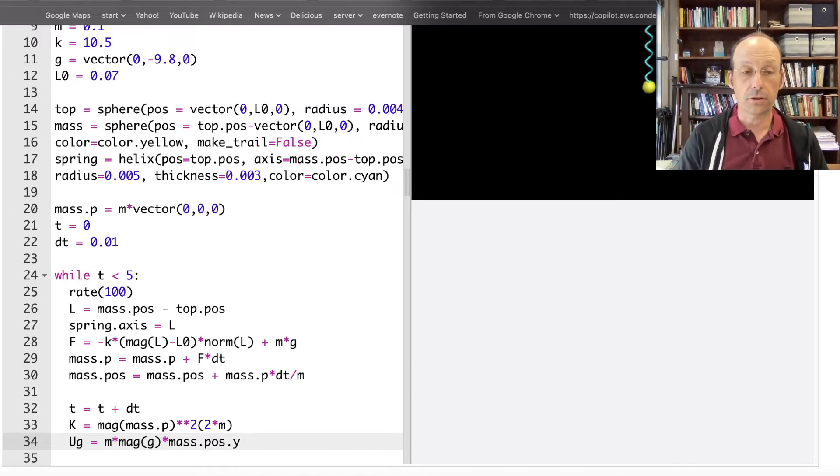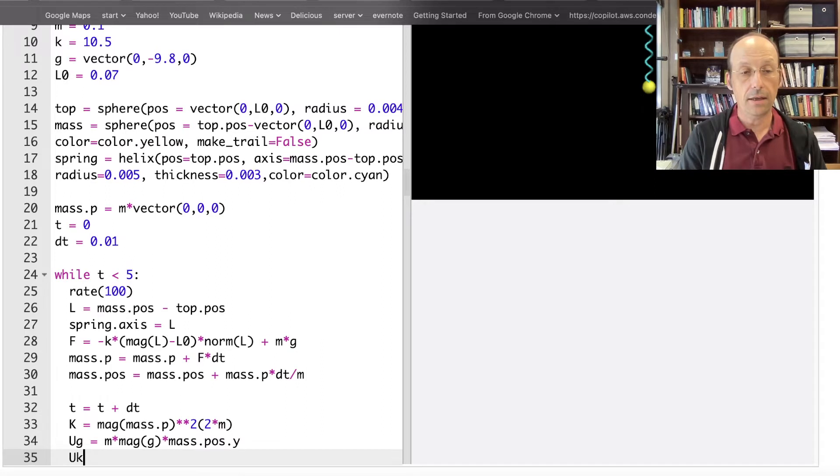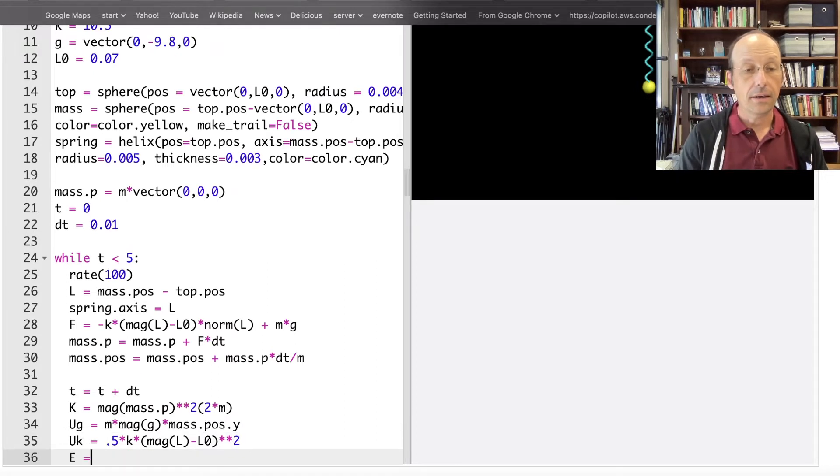That's the Y position. The spring potential energy UK is equal to 1 half times K times the stretch squared, S squared. So what is S? Well, S is this. If you go back and look at how I calculate the spring force, it's this mag L minus L0. So I'm just going to take mag L minus L0 and square that. And then E is just K plus UG plus UK.